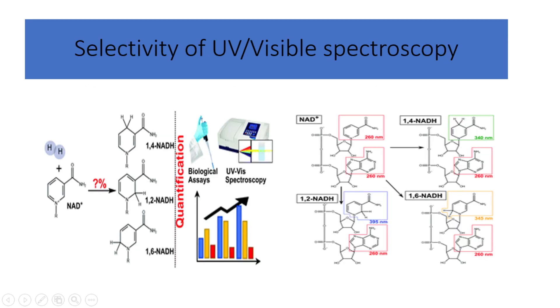Spectroscopy offers selectivity by focusing on specific regions of the electromagnetic spectrum. Different molecules and substances interact with light uniquely, leading to characteristic absorption or emission patterns. Scientists can target specific compounds by selecting the appropriate wavelength range and obtaining accurate information about their presence or behavior. This property is known as selectivity.